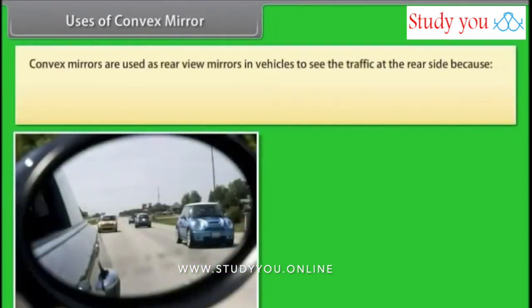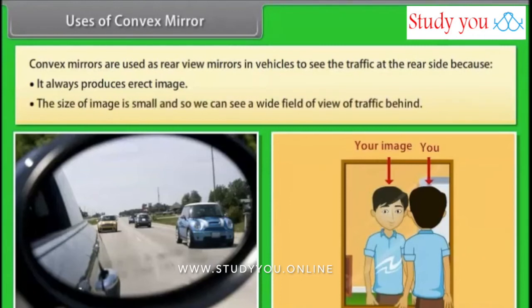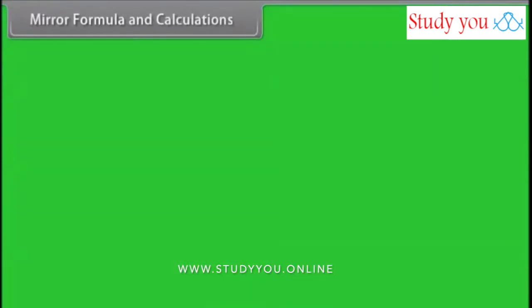Uses of convex mirrors: Convex mirrors are used as rear-view mirrors in vehicles to see traffic at the rear side, because they always produce an erect image, the size of the image is small, and so we can see a wide field of view of traffic behind.